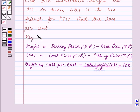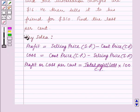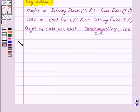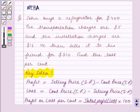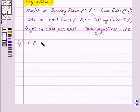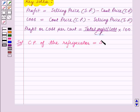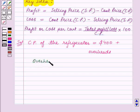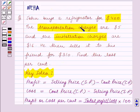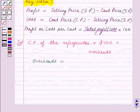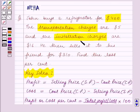So this is the key idea for this question, and using this key idea we will solve the question. We are given that John buys a refrigerator for $400. We are also given the transportation charges and the installation charges. So the cost price of the refrigerator is equal to $400 plus overheads. The overheads are equal to the transportation charges which is $5 plus the installation charges which is $16.